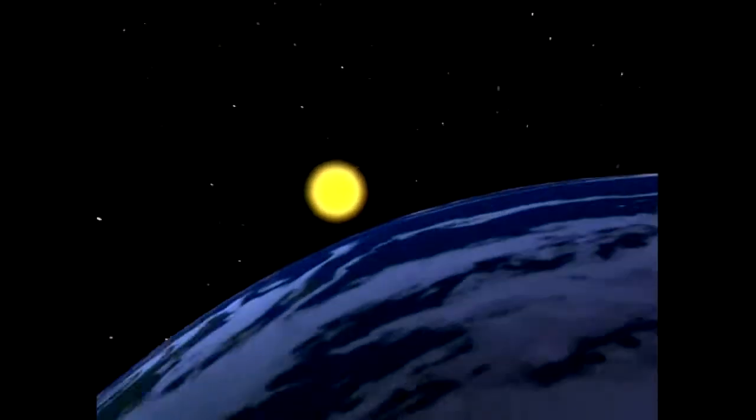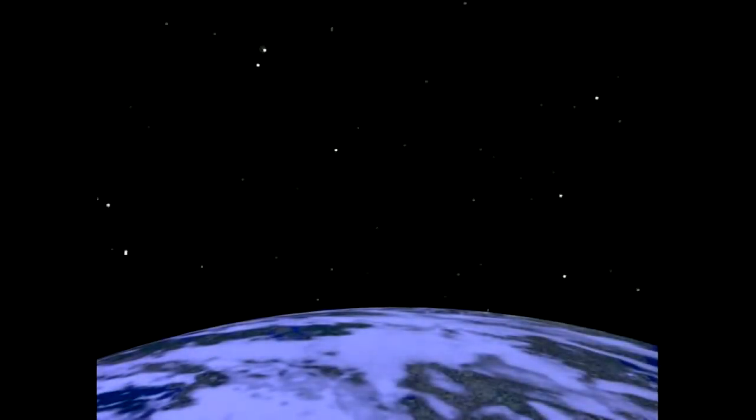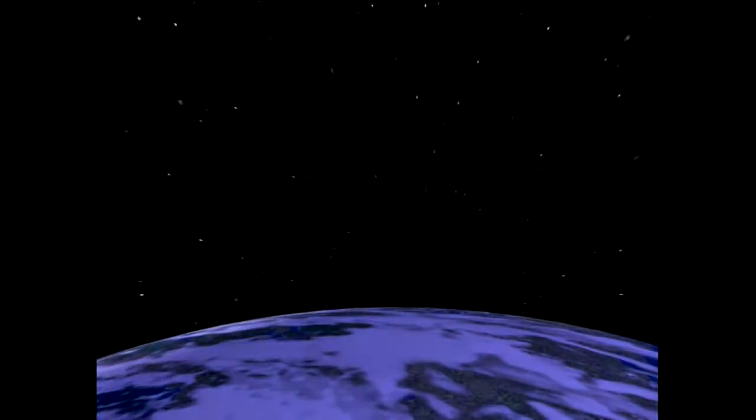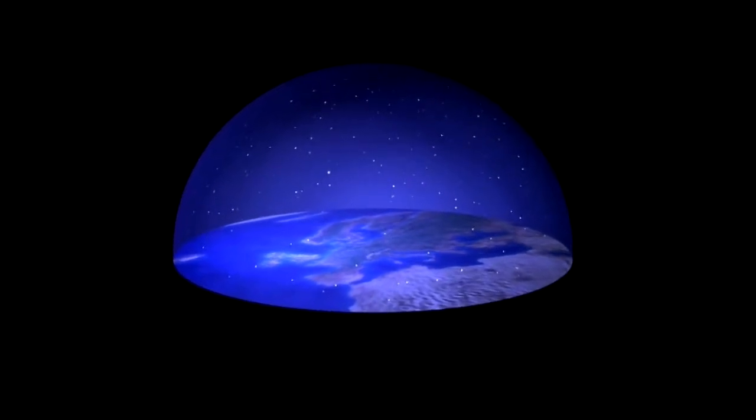Seen from the Earth, everything seems to revolve around us: the Sun, the Moon, the planets and stars. This explains the view of the Universe in ancient times. Earth in the center, under the vault of Heaven, with the Sun, Moon and stars fixed to this vault.